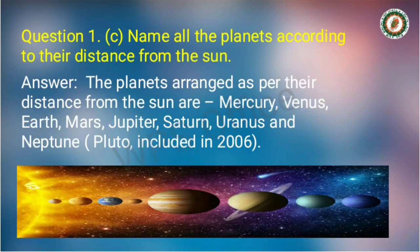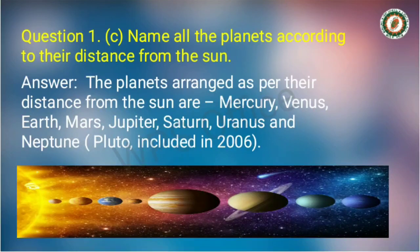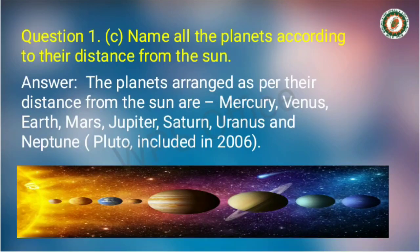Question number 1c: Name all the planets according to their distance from the sun. The planets arranged as per their distance from the sun are Mercury, Venus, Earth, Mars, Jupiter, Saturn, Uranus, and Neptune. Note that Pluto was previously removed from the list, but in 2006 it was included back in the list of planets.